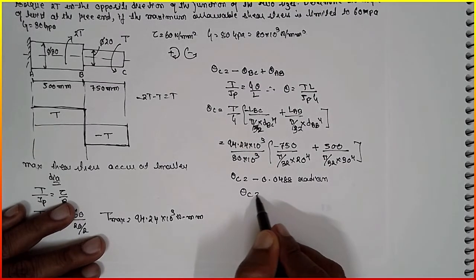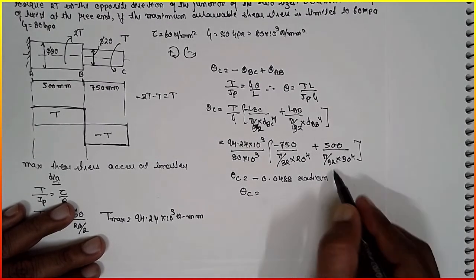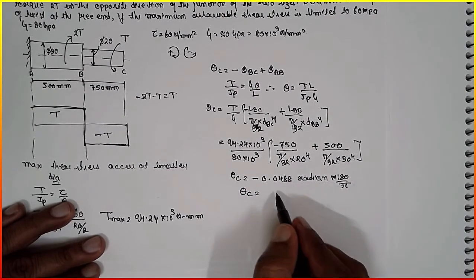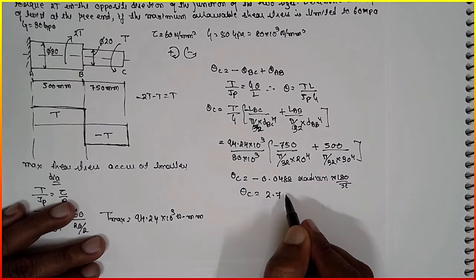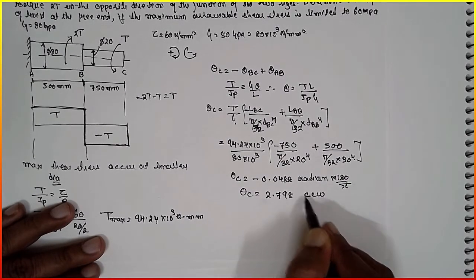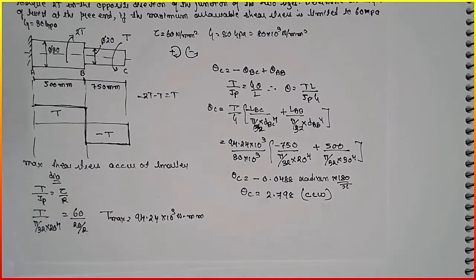In terms of degree, you have to multiply by 180 divided by pi. It will be 2.798 degrees CCW, counterclockwise direction.